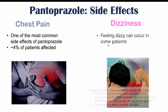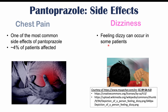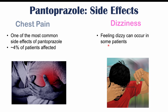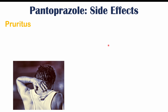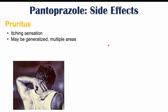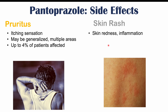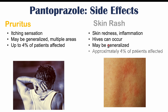Dizziness can also be a side effect — generally mild dizziness may be noted in patients who use PPIs like pantoprazole. Pruritus, or an itching sensation, is another side effect. It can be generalized across multiple areas of the body, and up to four percent of patients who use pantoprazole can experience itching. Skin rashes can also occur, including skin redness, inflammation, and hives. Approximately four percent of patients using proton pump inhibitors can be affected by skin rash.